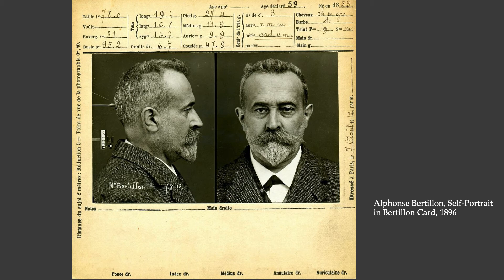Here is a mugshot of Bertillon himself — he made a self-portrait as what they called a Bertillon card. You see the measurements marked on the top area of the card, records of specific areas of the face. He had a whole system for measuring certain facial areas and recording those measurements. Originally those measurements were the point, as he believed precise records would reflect physiognomic qualities reflecting character traits. But in using the photograph to verify those records, the photographs ended up being very useful identification documents on their own.